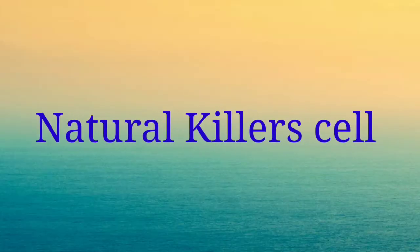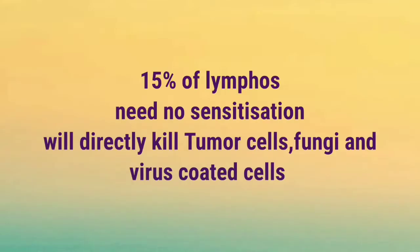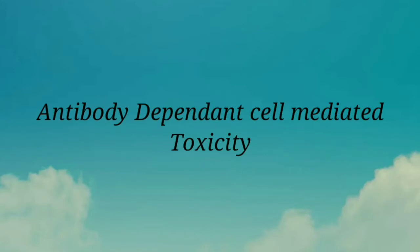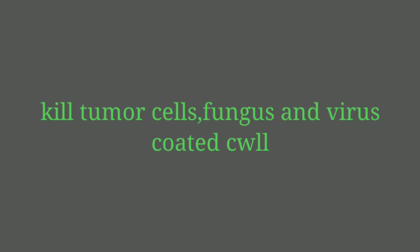The third and last category of lymphocytes is the natural killer cells. These make up 15 percent of circulatory lymphocytes and are also known as large granular lymphocytes because they have a lot of granulations, are larger in size, and have a pale cytoplasm. Natural killer cells are involved in killing cells through antibody-dependent cell-mediated cytotoxicity; they also directly kill tumor cells, fungal-infected cells, and cells infected by viruses.